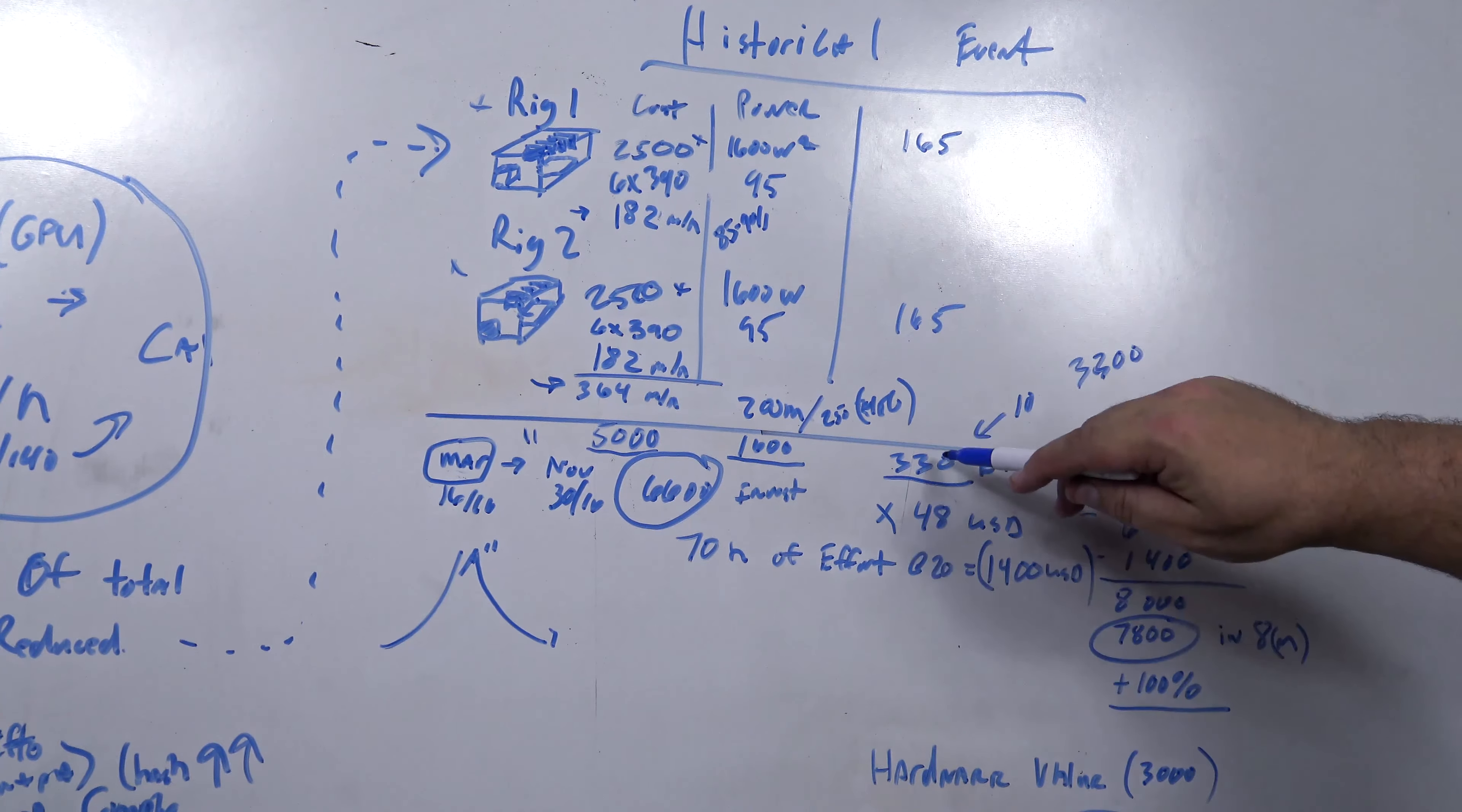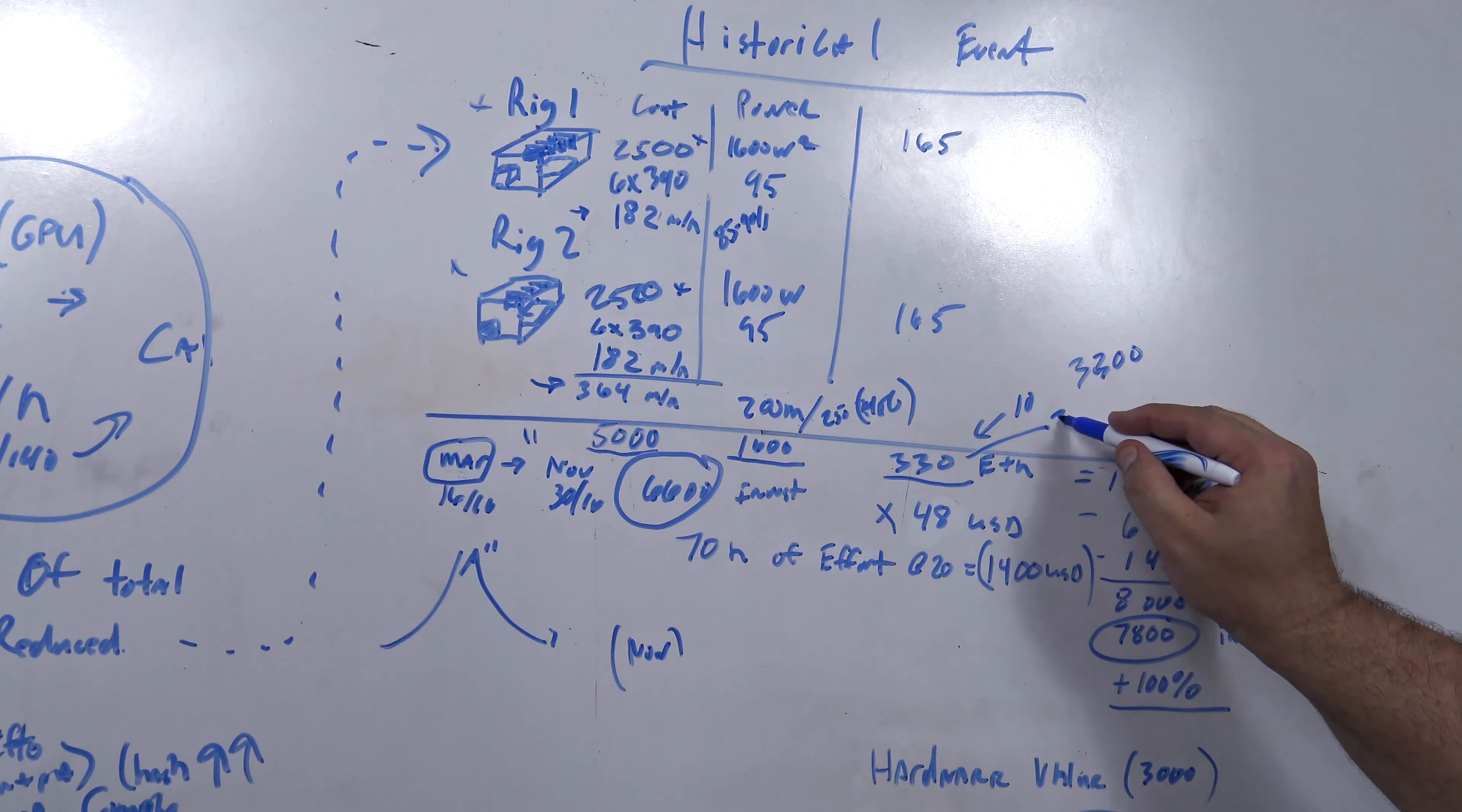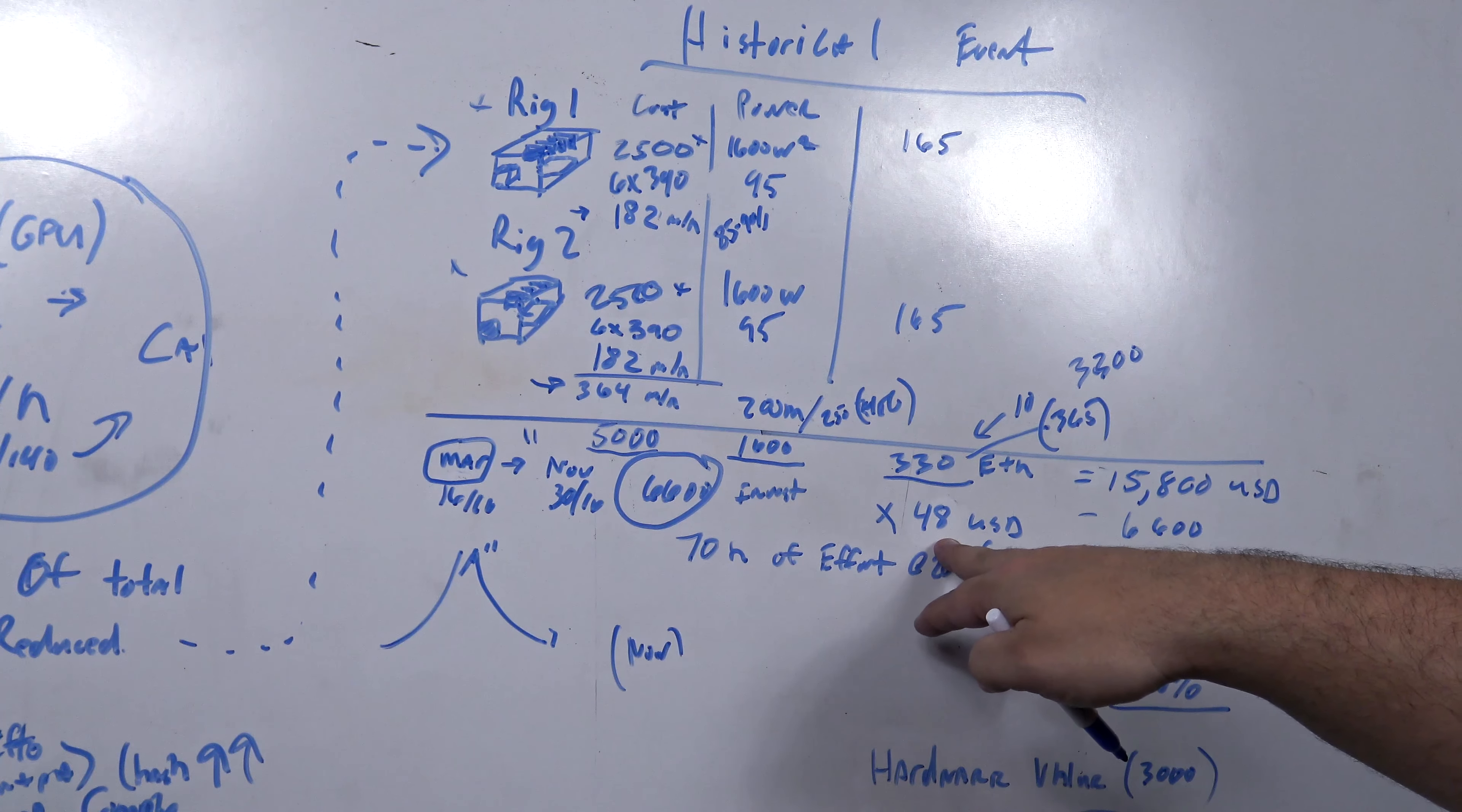If we follow this 330 ethereum, this time frame, we look at now, and this rig continued to actually mine ethereum all the way to current. I think the total now is like 365, roughly 365 ethereum total. But just from this time period is the scope that we're looking at. You look at the rolling average over the last week for ethereum's price, about 48 bucks, 48 to 50 dollars. That 330 times the 48 is $15,800.